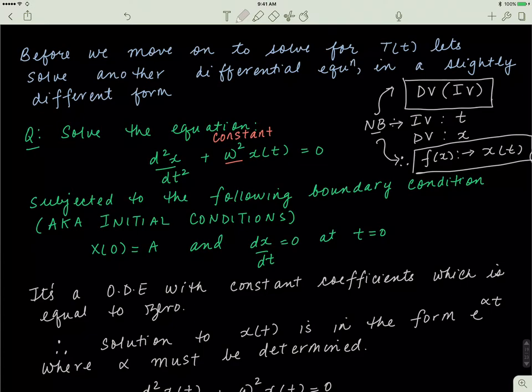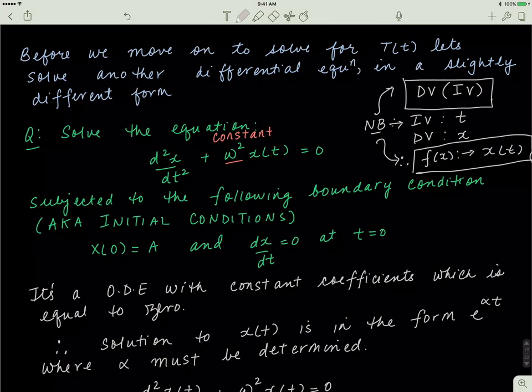Before we move on to solve for the temporal or time-dependent part of the classical wave equation, let's solve another differential equation that has a slightly different form. In this differential equation, I have an omega squared — omega is this Greek letter — and instead of having y as a function of t, I have x as a function of t, meaning the spatial part x depends on time t.